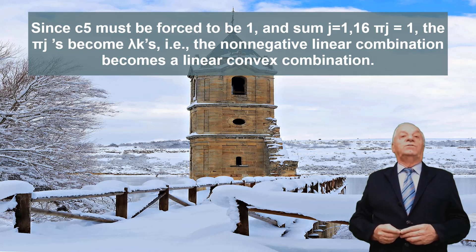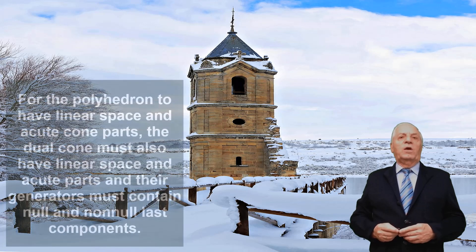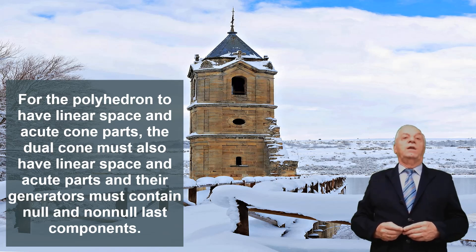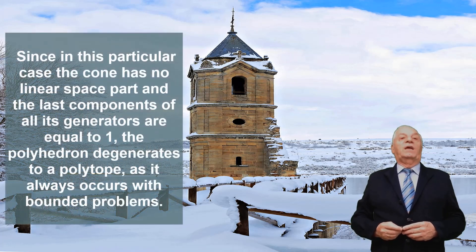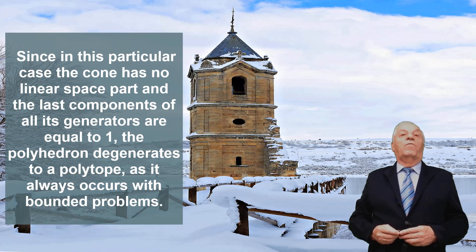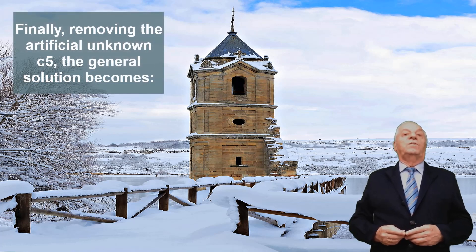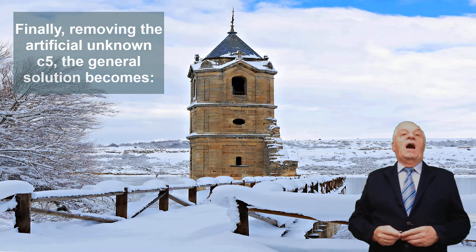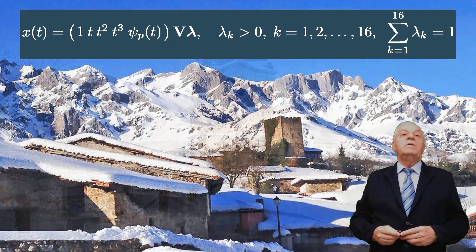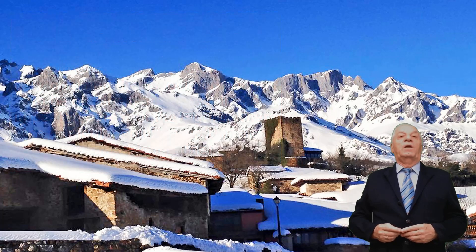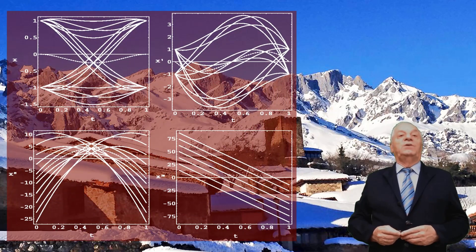For the polyhedron to have linear space and acute cone parts, the dual cone must also have linear space and acute parts with generators containing null and non-null last components. Since in this particular case the cone has no linear space part and the last components of all its generators are equal to 1, the polyhedron degenerates to a polytope, as always occurs with bounded problems. After removing the artificial unknown c5, the general solution with the indicated conditions is obtained. The 16 generator functions, which allow all possible solutions to be generated as a polytope, are shown in the upper left corner of the figure, along with the particular solution Cp(t) shown as the dotted line.